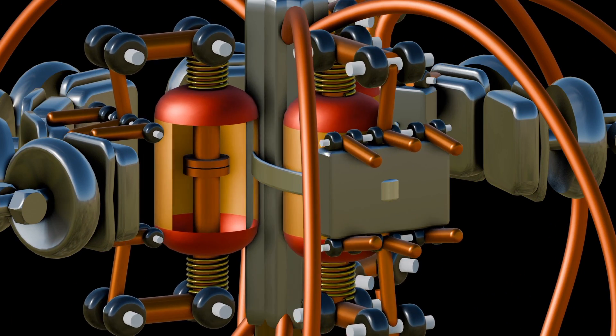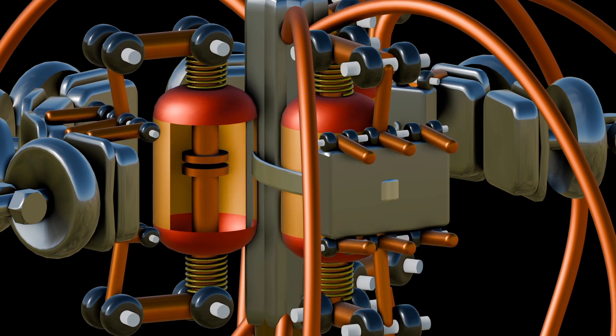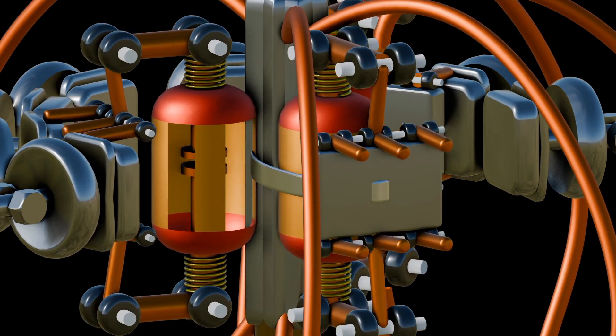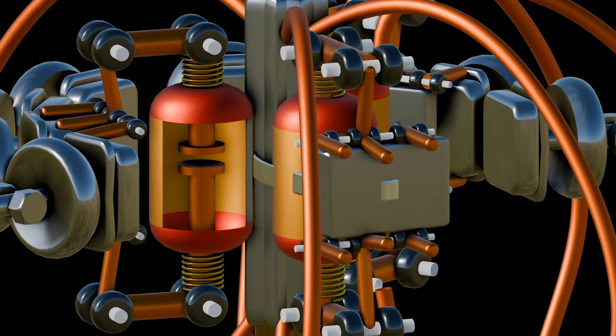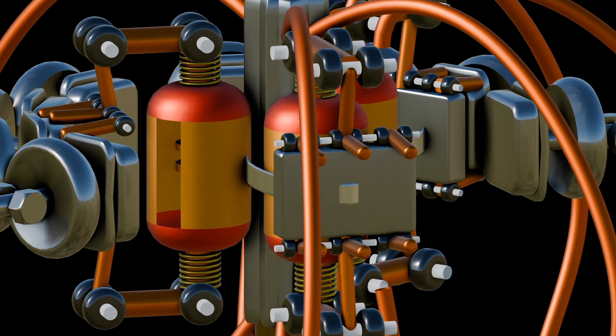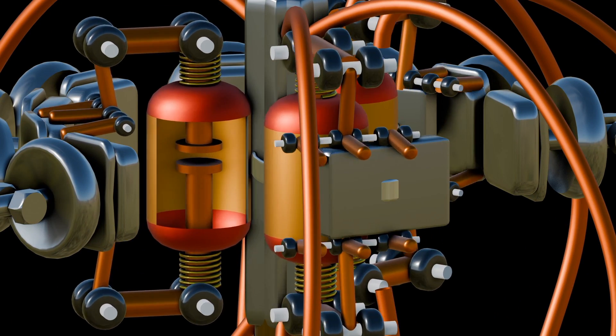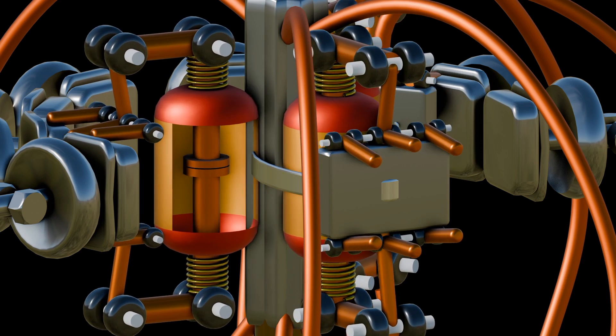This vacuum ensures that there are no air molecules present between the contacts, which could cause arcing when the switch operates. So during operation, when the switch is closed, current flows through the contacts, allowing electrical continuity. Because the vacuum eliminates air molecules, there is no medium through which an arc can form between the contacts. The vacuum ensures that any arc that might occur is extinguished quickly.